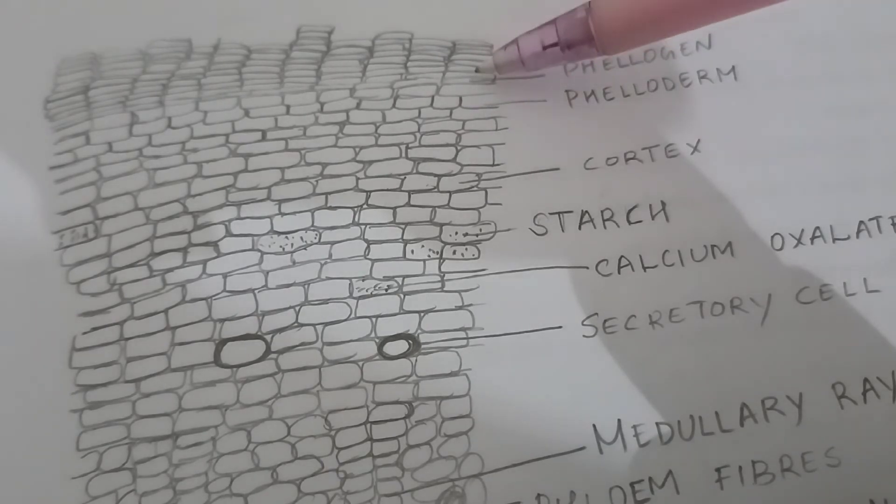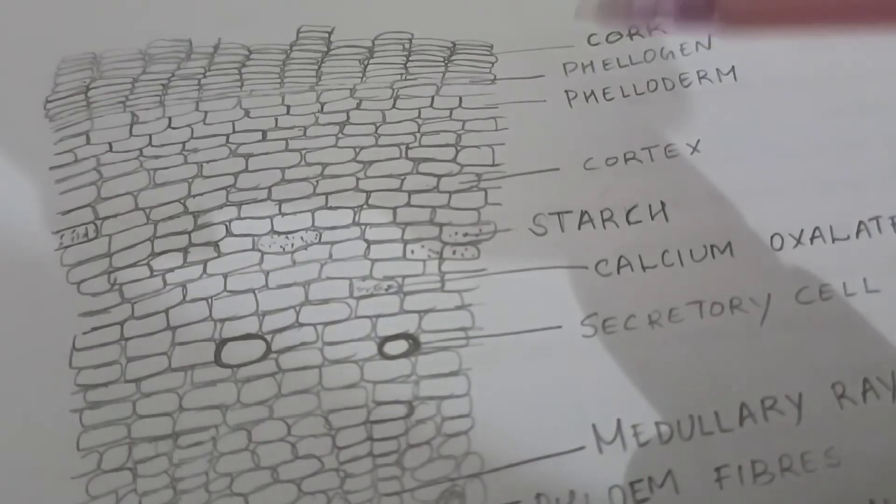Below that we can see 2-3 layers of thin-walled cells without any cellular content. It is called phelogen. They are rectangular cells.